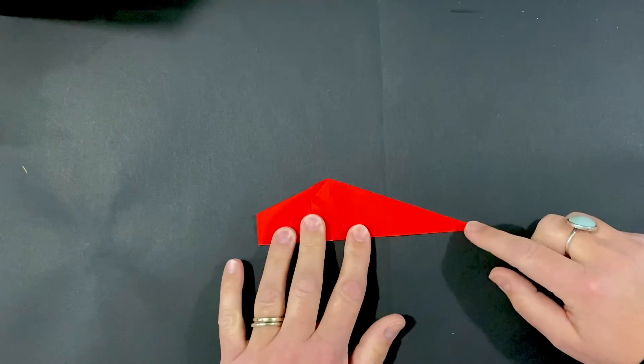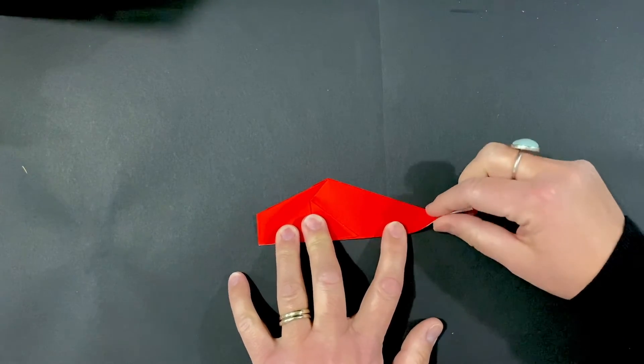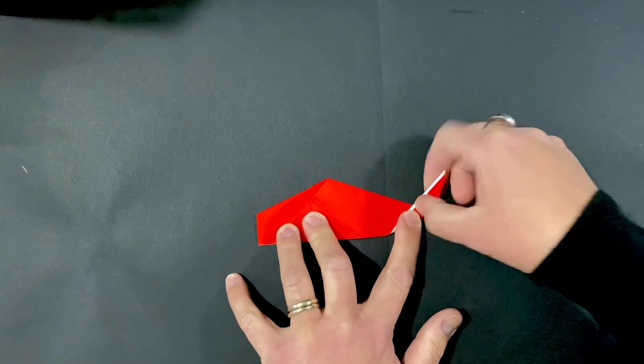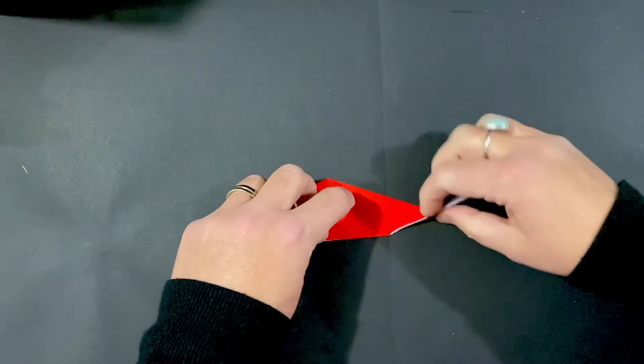Next, we want to do the tail. We're going to take this back point and we're going to flip it up diagonally and give it a crease. Next, you're going to unfold that.